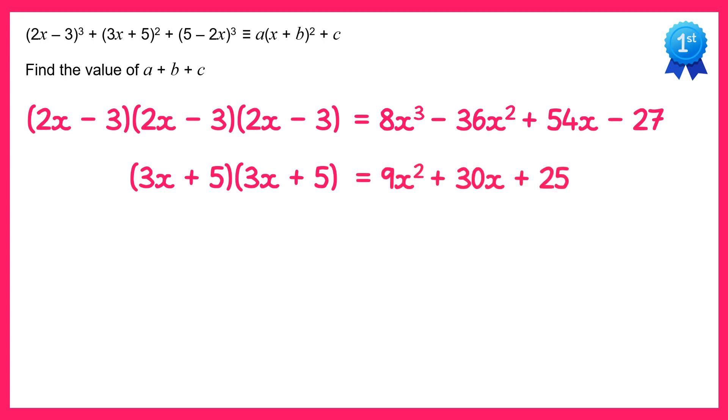Finally we've got 5 minus 2x all cubed, so we multiply that one three times: 5 minus 2x times 5 minus 2x times 5 minus 2x again, and that will give you this.